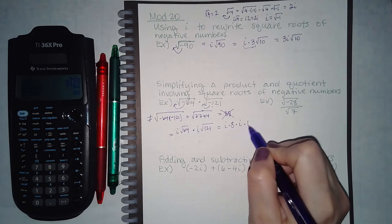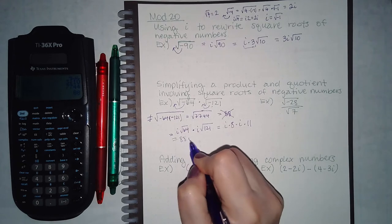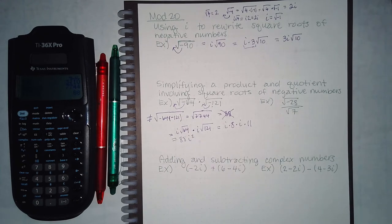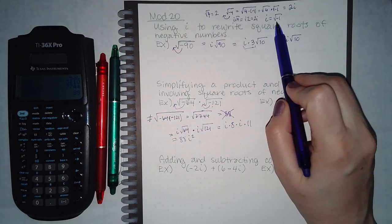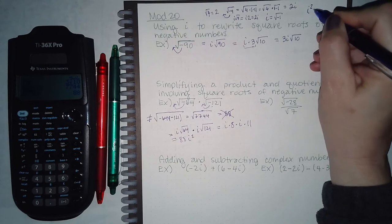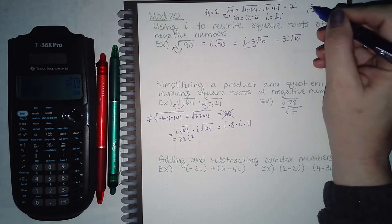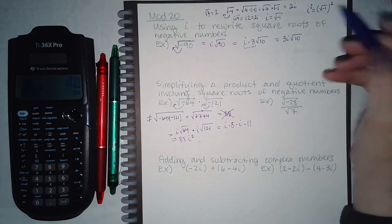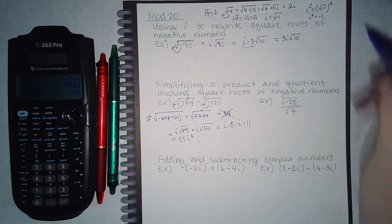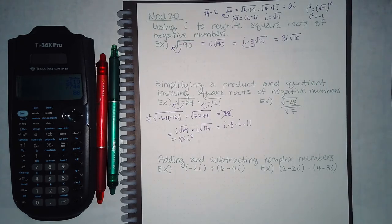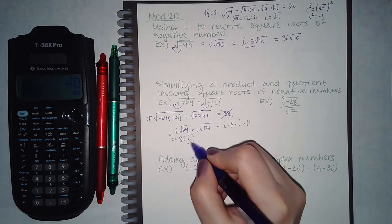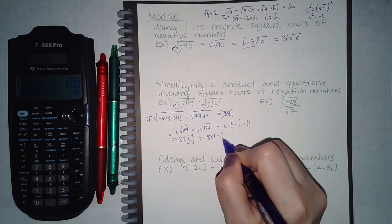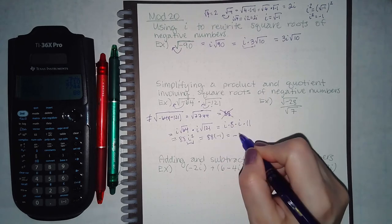That gives you 8 times 11 times i squared, which equals 88i squared. Now, since i equals the square root of negative 1, if you square both sides, i squared equals negative 1. So i squared here is equivalent to negative 1, and therefore the answer is actually negative 88.